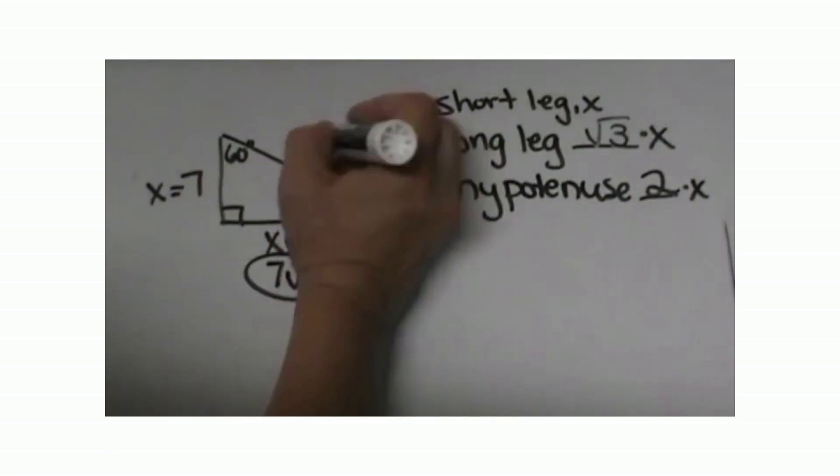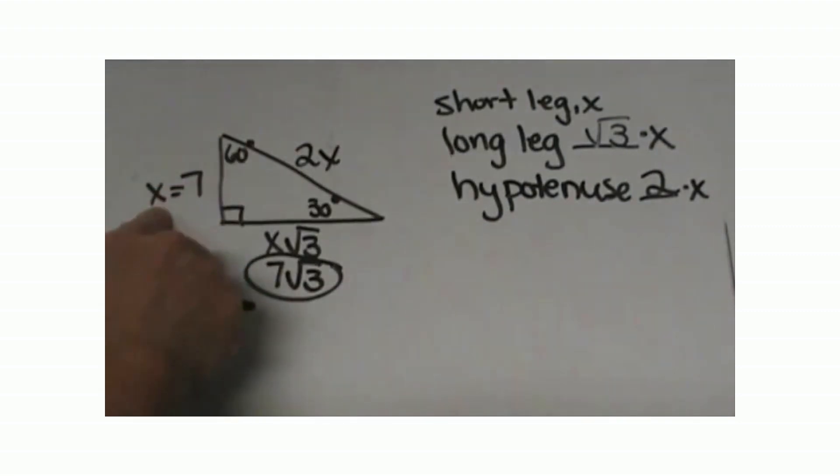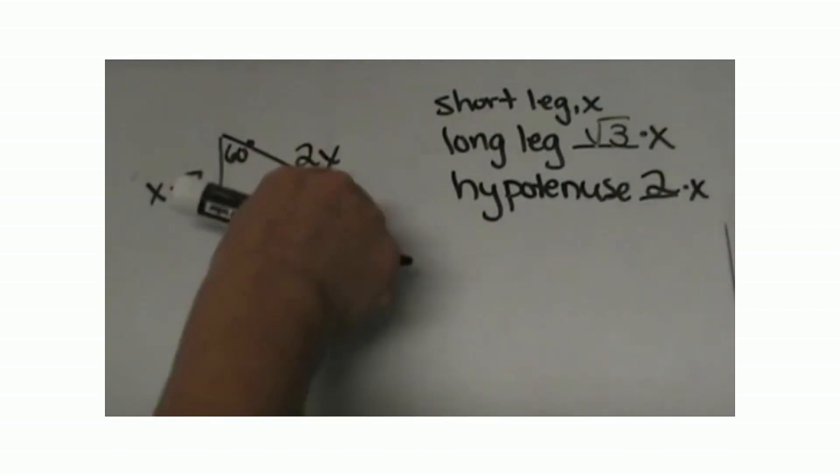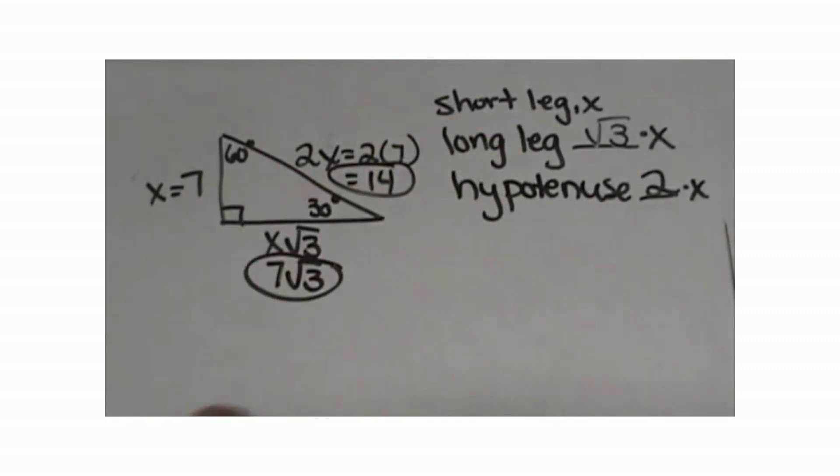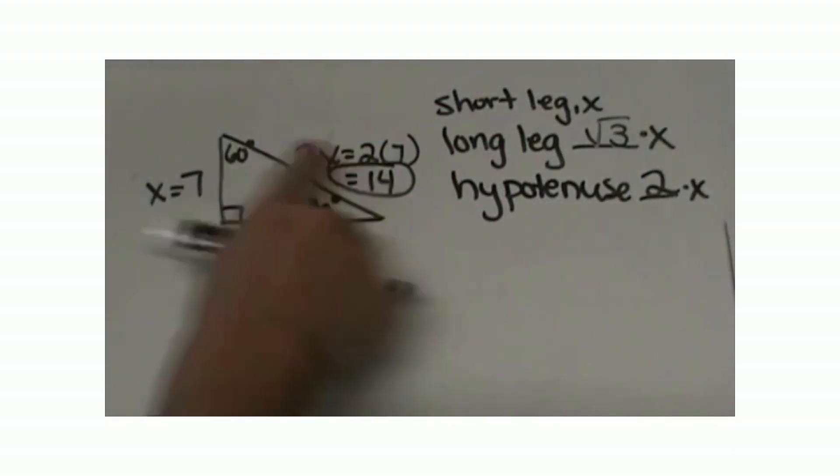Now the hypotenuse is 2x. Again, we know x is 7, so we are going to plug a 7 in there. 2 times 7, so the hypotenuse is 14. That is how you find each of the sides.